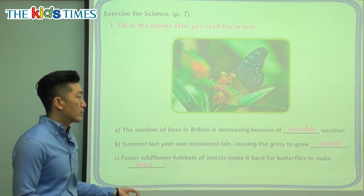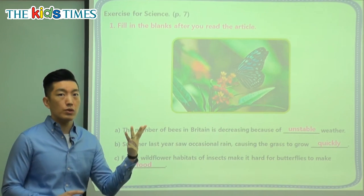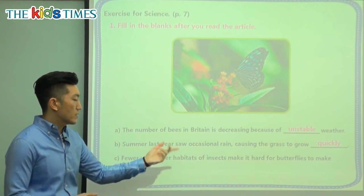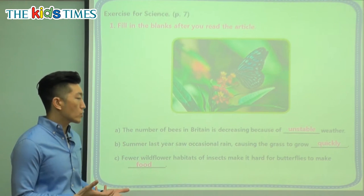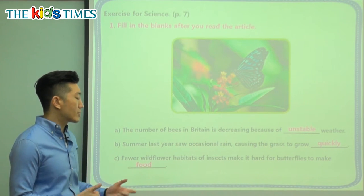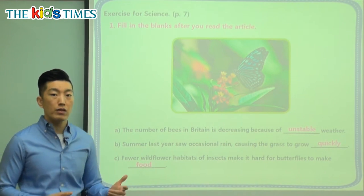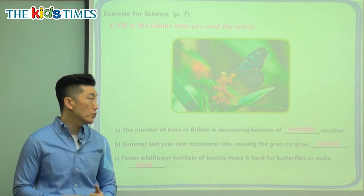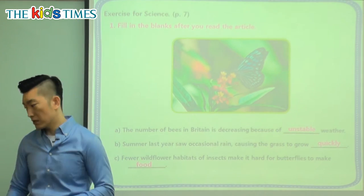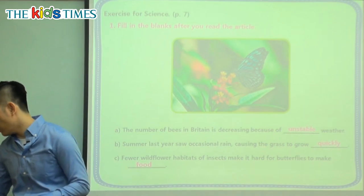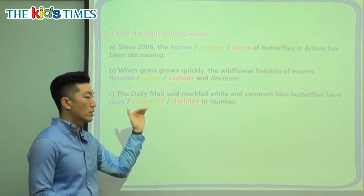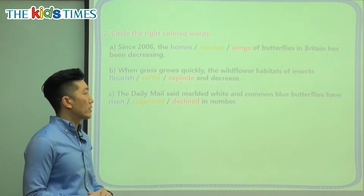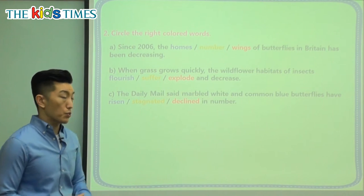So because the grass is growing too quickly and the homes of these insects are changing so fast, it makes it more difficult for butterflies to make the food they need to survive. That is also causing problems — the number of butterflies going down as well.